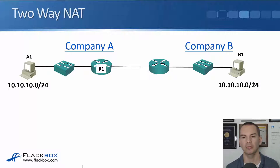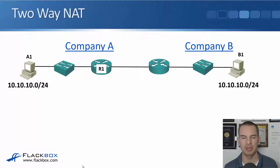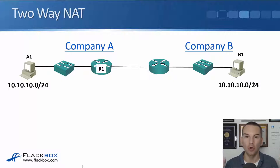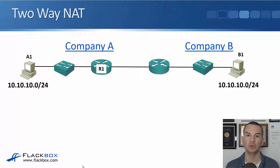With two-way NAT, where it is most commonly used is if we have a merger between two companies. Here we've got company A and company B, and they're both using the private IP address range 10.10.10.0/24. Long-term we would do IP readdressing, because within the same company you never want duplicate IP addresses. But because we've only just done the acquisition and haven't had time to do the readdressing yet, we need immediate connectivity between hosts, and to do that we're going to have to do two-way NAT.